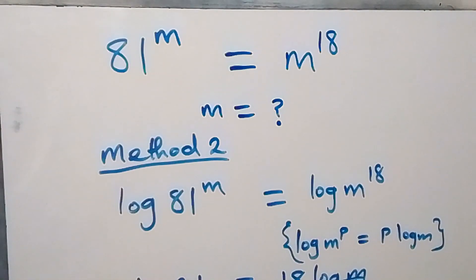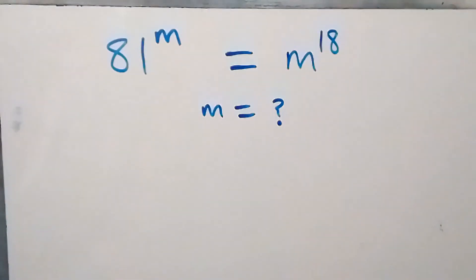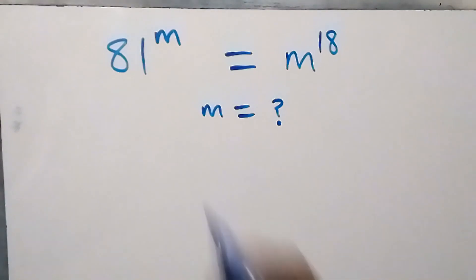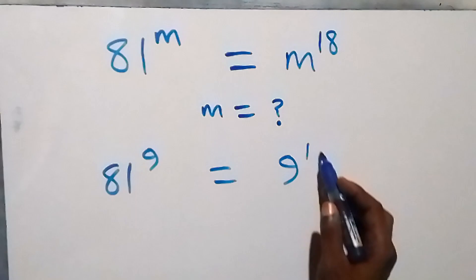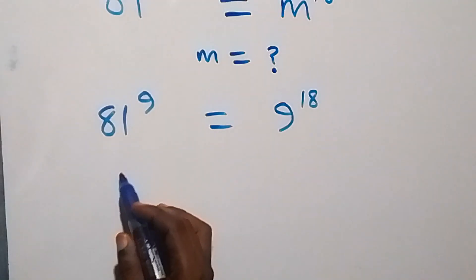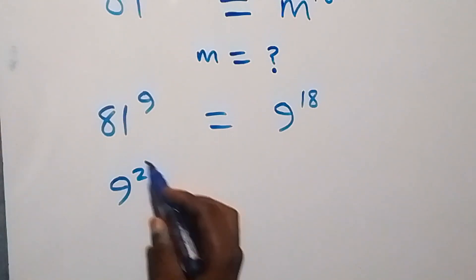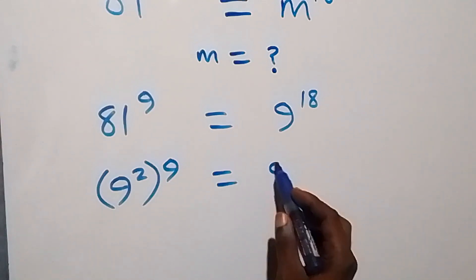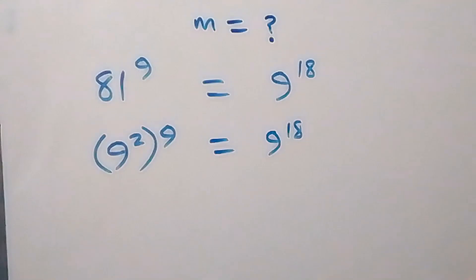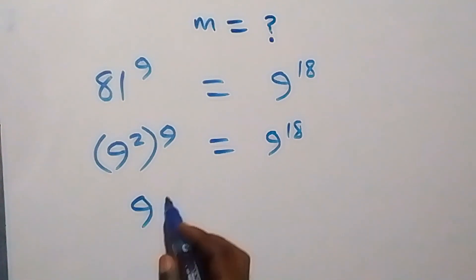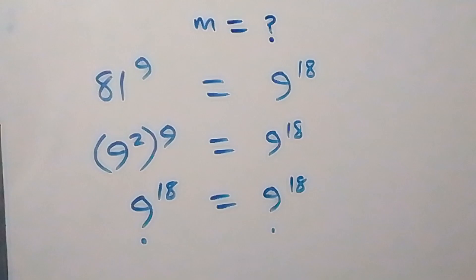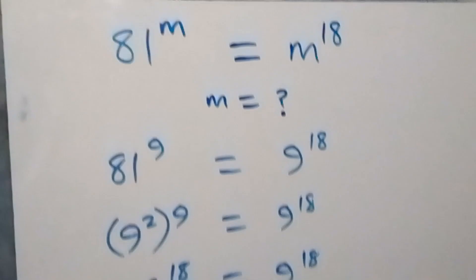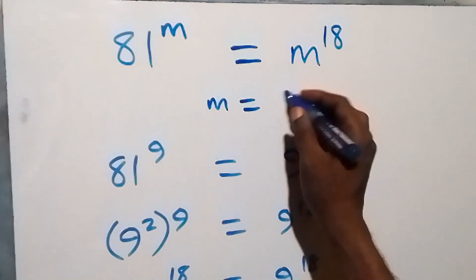Let's verify by substituting m equals 9 into the original equation. The left-hand side becomes 81 raised to power 9, and the right-hand side becomes 9 raised to power 18. Since 81 equals 9 squared, we have 9 squared raised to power 9, which equals 9 raised to power 18. The left-hand side equals the right-hand side, confirming that m equals 9 truly satisfies the given problem.